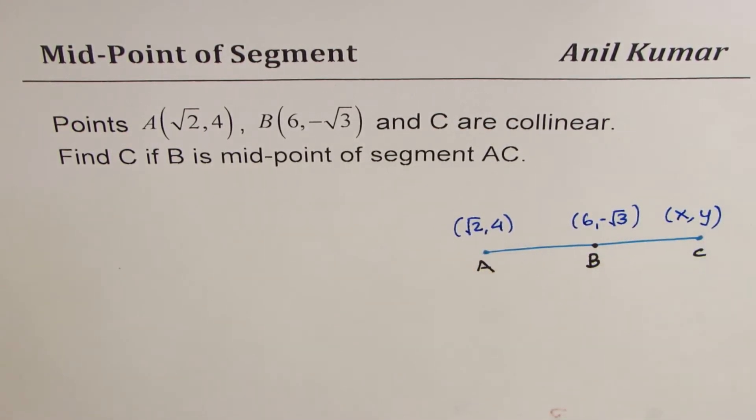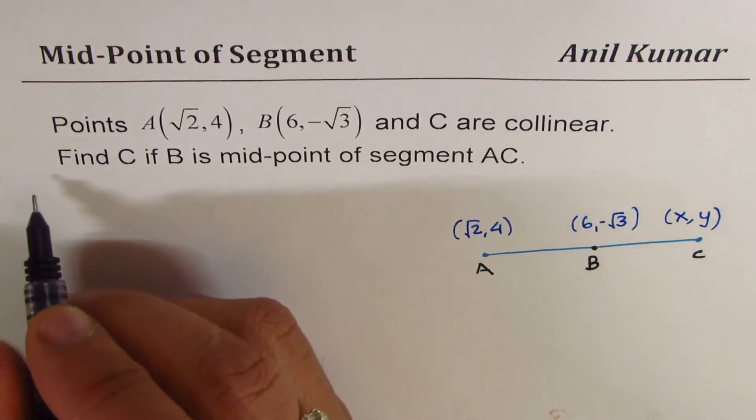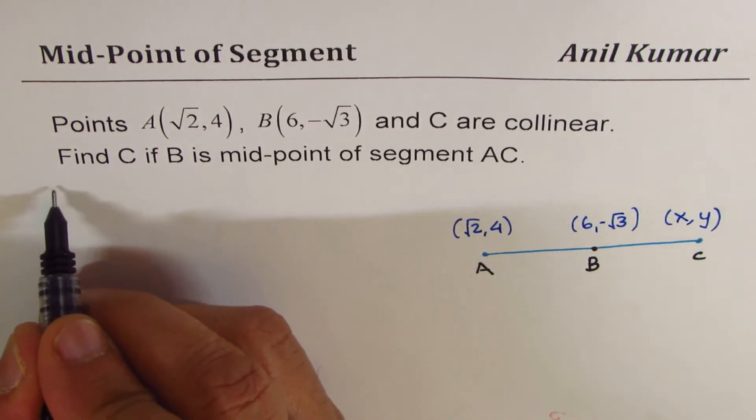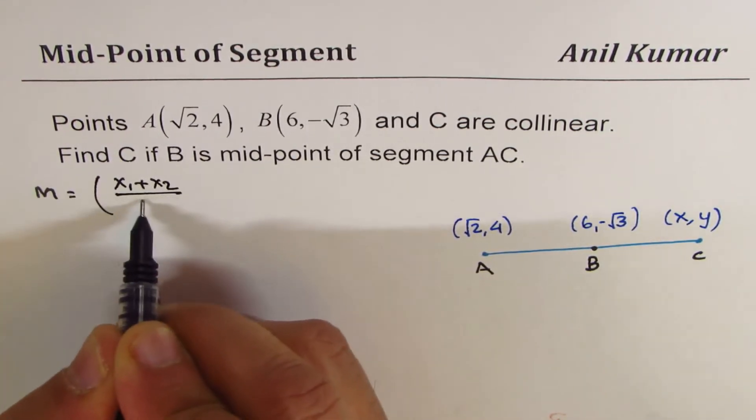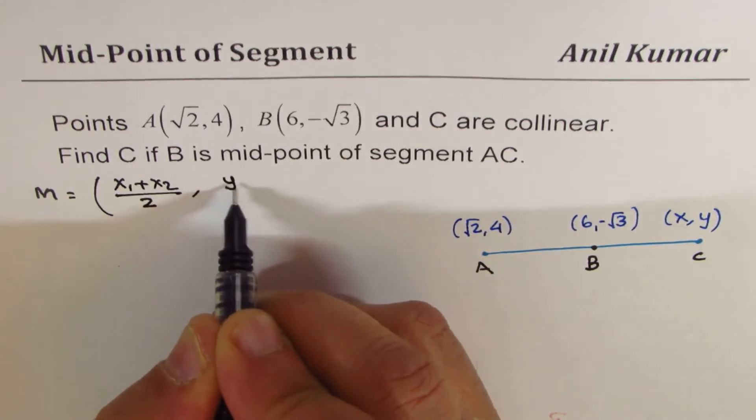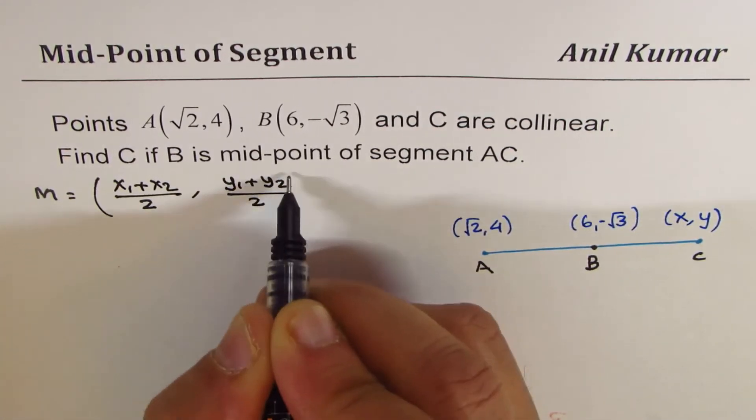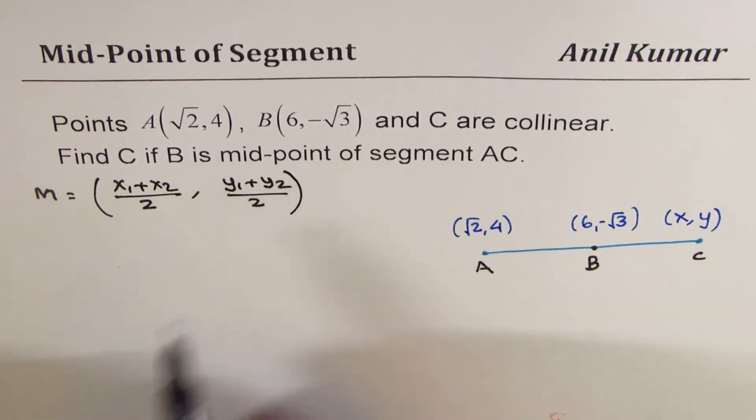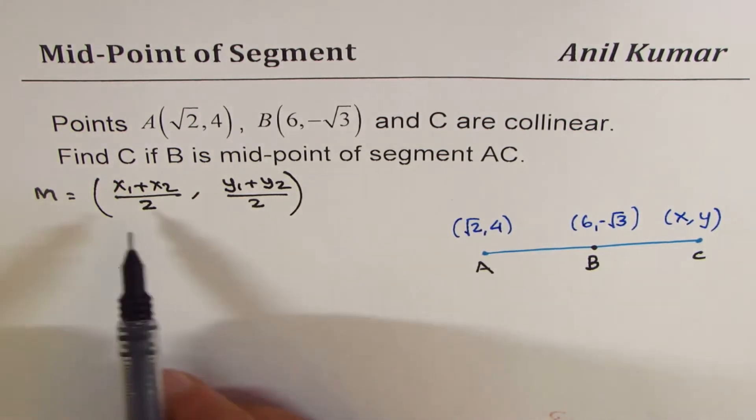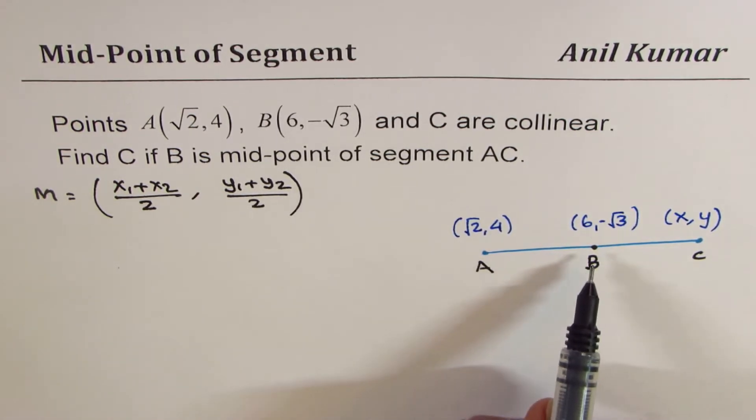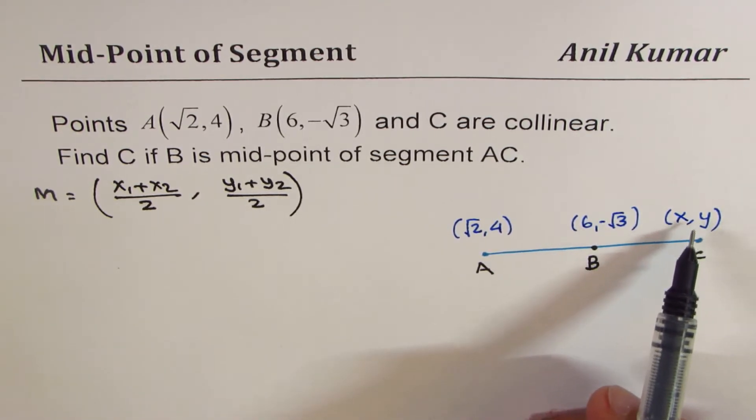We'll apply the formula for midpoint to find coordinates of C. Normally, midpoint coordinates are (x₁ + x₂)/2 and (y₁ + y₂)/2, where (x₁, y₁) and (x₂, y₂) are the values of the endpoints. We'll apply the same formula to solve this question. However, here we are given the midpoint and we don't know the endpoint, which is (x, y).